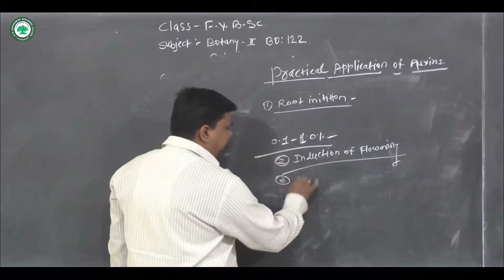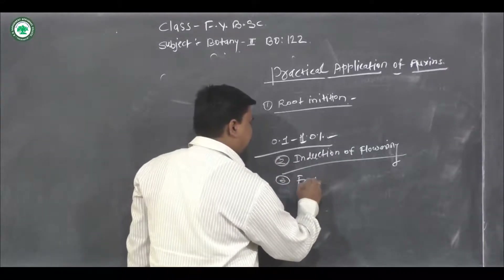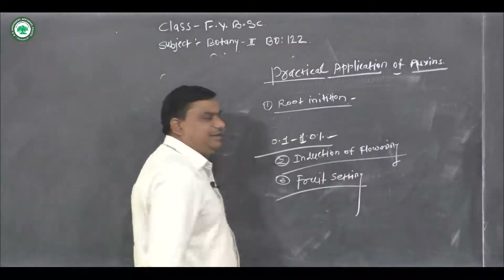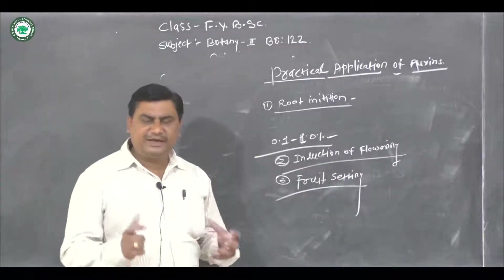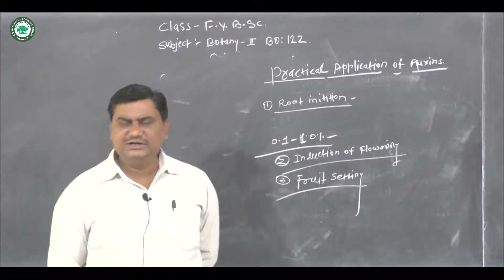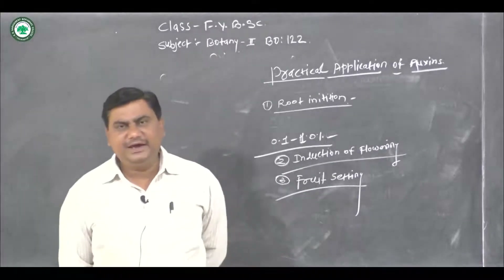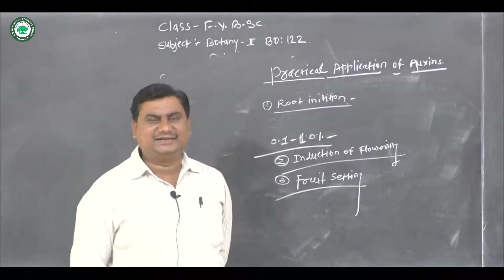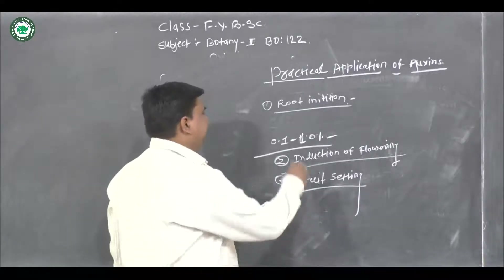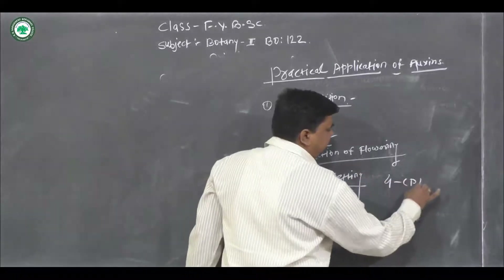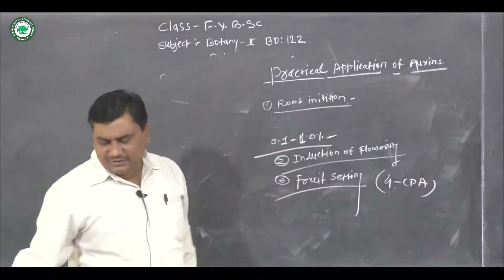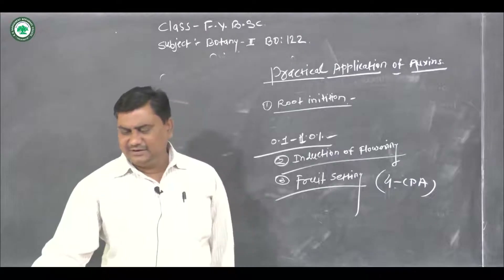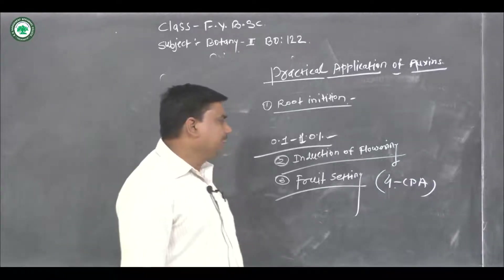Third application: auxin plays an important role in fruit setting. Application of minute doses of auxin like IAA, IBA, NAA, and 4-chlorophenoxyacetic acid (4-CPA) can increase fruit setting in many plants.